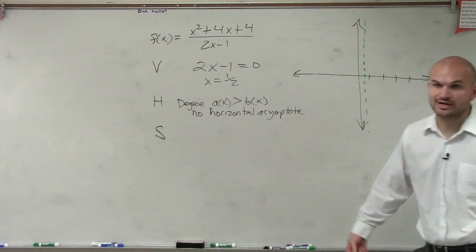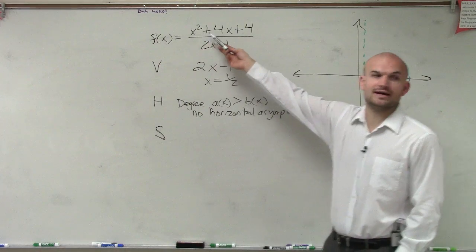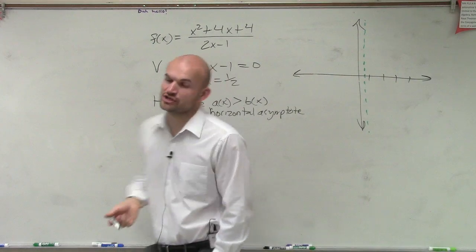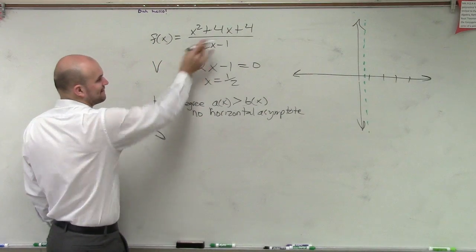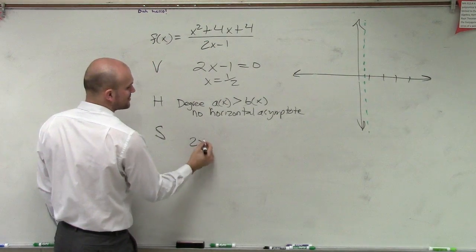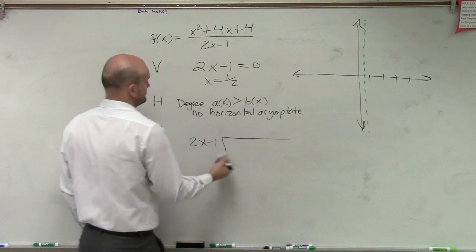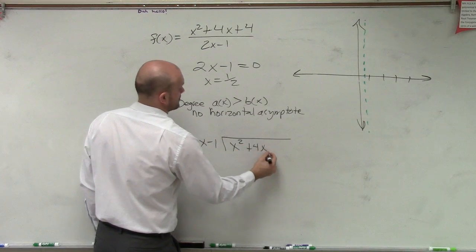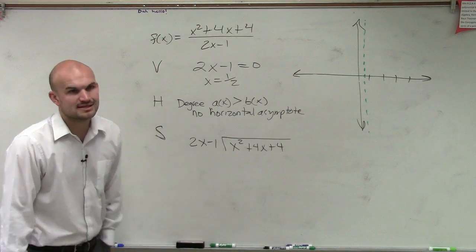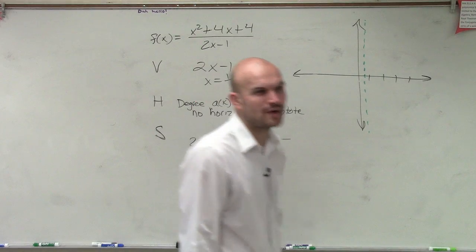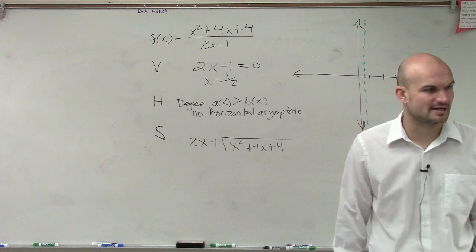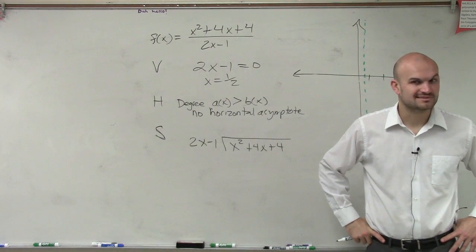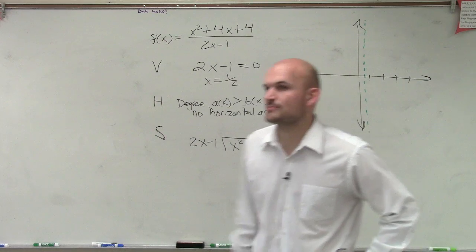So now I look at the difference of the two degrees. Do I have a difference of 1 between my degrees? Yes. So now what I need to do to determine the slant, I need you to divide them. And I'm going to use long division. Now, is it possible to use synthetic? And why would we need to use synthetic? When could we use synthetic?